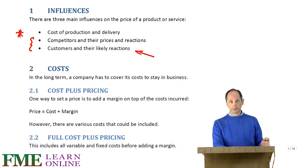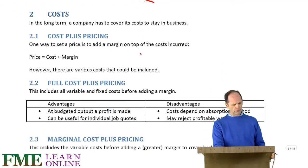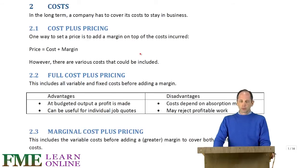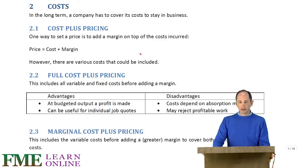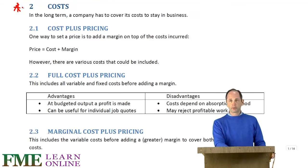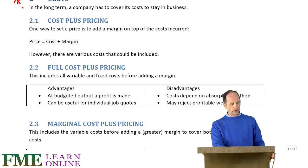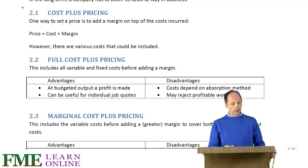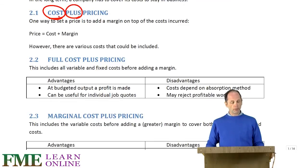Those areas cover the calculations we need to look at. To start with, we might rather simplistically think about only the costs — suppose there is no competition, no other product like ours, and customers will pay whatever we deem appropriate. In which case we've only got the costs to worry about. In the long term we have to cover our costs to stay in business, so one way to set a price is to identify what the costs are and then add a margin on top.